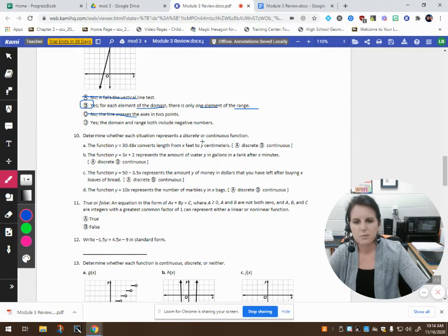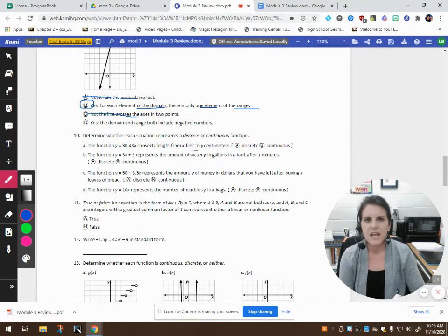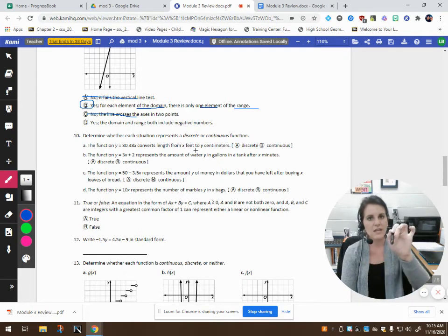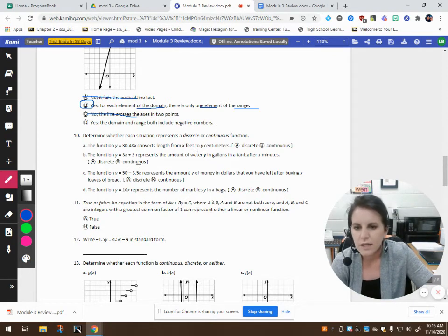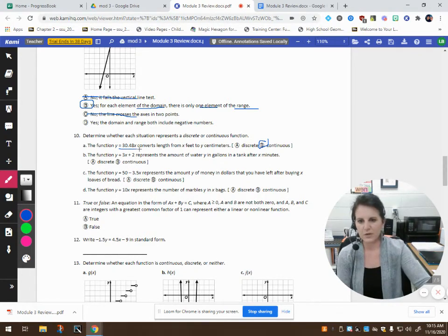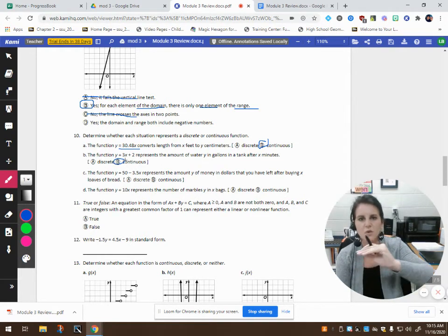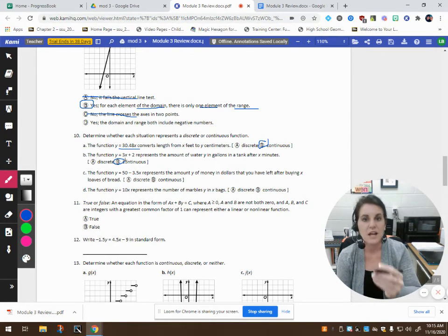Determine whether each situation represents a discrete or continuous function. Remember, discrete is just a bunch of random points on the graph. And continuous means if I was dragging my pencil along it, it never comes up. So, the function converts length from x feet to y centimeters. Well, we know that's going to be continuous because that's a linear function. It's going to be a straight line if I were to graph it. The function y = 3x + 2 represents the amount of water in gallons in a tank after x minutes. Again, it's continuous. The water is flowing at a continuous rate.